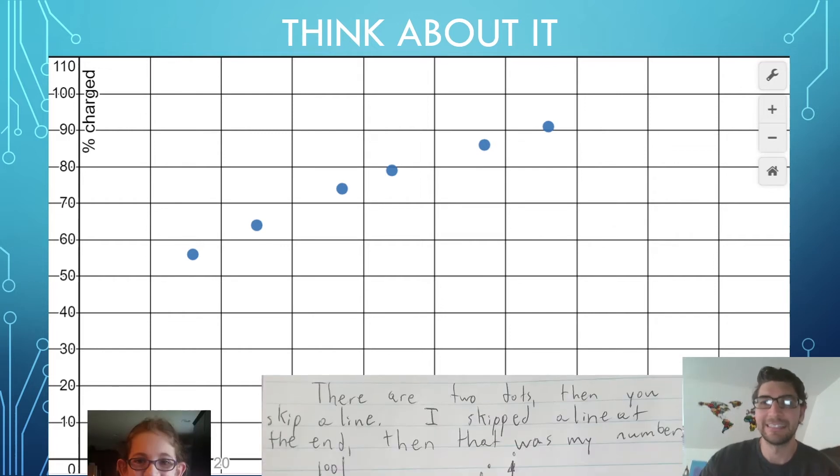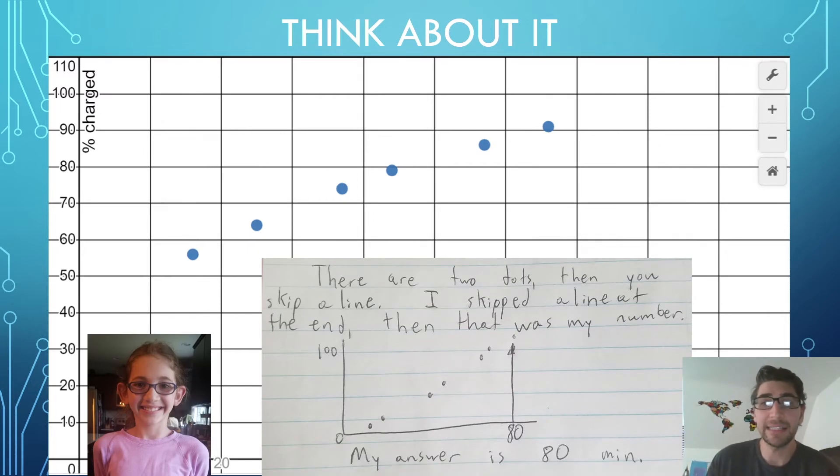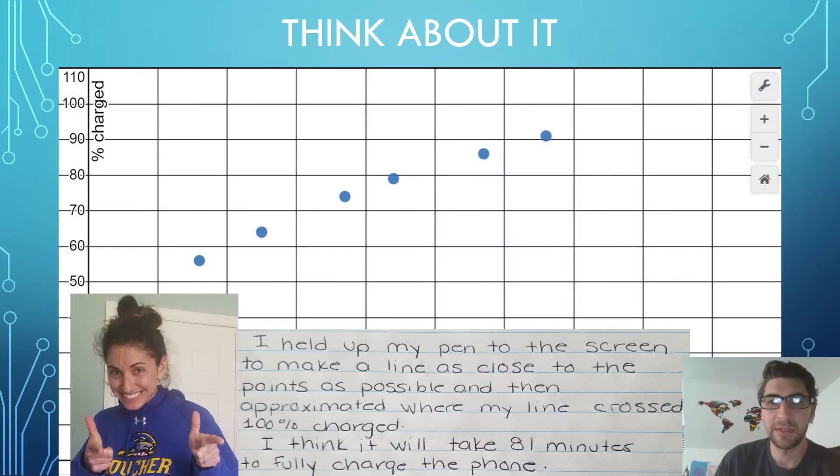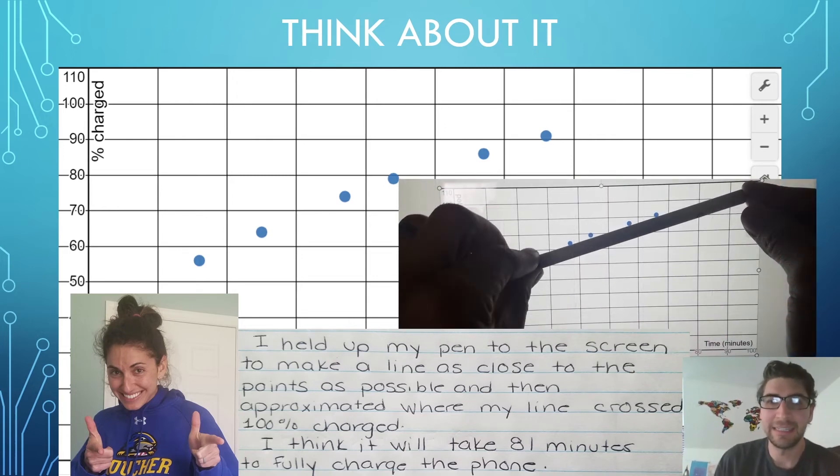Let's see what my family had to say. Kayla said there are two dots, then you skip a line, and I skipped the line at the end, and then that was my number. Her answer was 80 minutes. I also love that she drew a little sketch of the graph and showed that at 80 minutes she thought we would have 100% charge. Pretty awesome. Here's what my wife thought about. She used a pen to hold up against the screen to make a line as close to the points as possible and then approximated where the line crossed 100%. She thought it would take 81 minutes to fully charge the phone. Pretty close to Kayla's guess of 80. How close was it to your prediction?